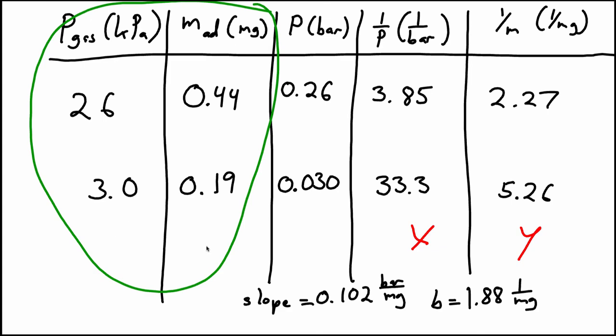So we have our original data, and because we were asked to do this as a one-bar standard state, we right away converted the pressures to bar, and then we took the reciprocal of the pressure and the mass of adsorbed gas to get these two columns. When we plot those as X and Y, we get this slope and this Y-intercept. And that's all we need to solve for answers.